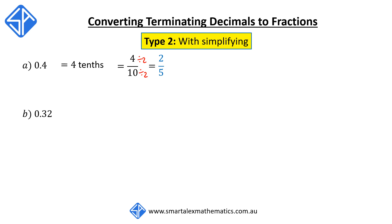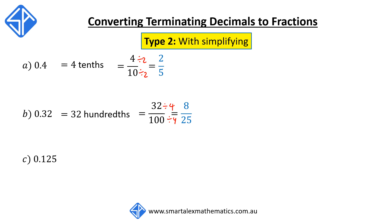Next example is 0.32. Two digits after the decimal point — we read this as 32 hundredths, which is equal to 32 over 100. We can divide the top and bottom by the highest common factor of 4, which gives us 8 over 25. For 0.125, three digits after the decimal point gives us 125 over 1000, and dividing top and bottom by the highest common factor of 125 gives us one eighth.